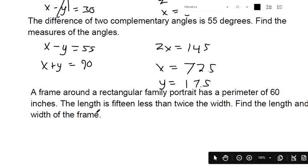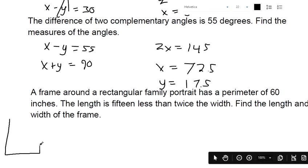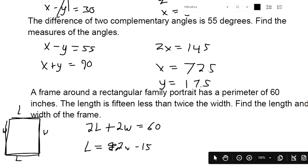Now this one's different. A frame around a rectangular family portrait has a perimeter of 60 inches. So it's a frame. There's lengths. There's two lengths and there's two widths. The perimeter is adding up all those four numbers. So there's two lengths plus two widths, that equals 60. And the length is 15 less than twice the width. So here's twice the width, and we have to write it like this to make something 15 less than something else. You've got to subtract the 15 away from twice the width.